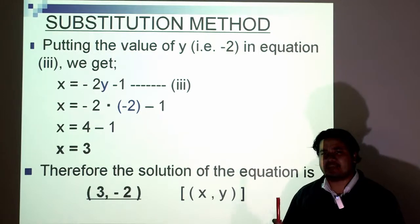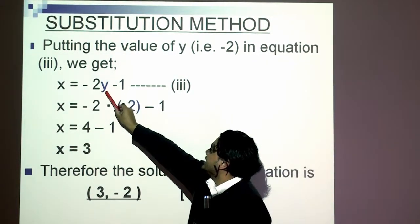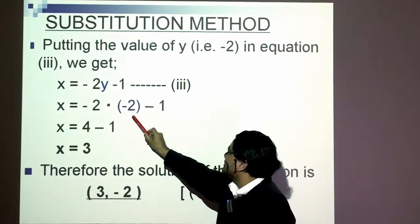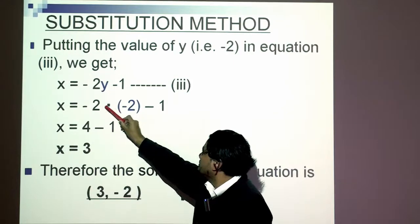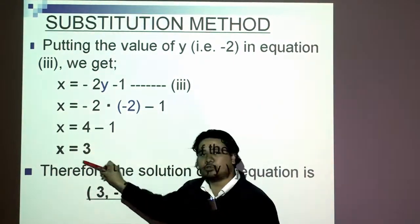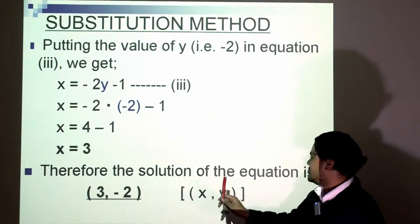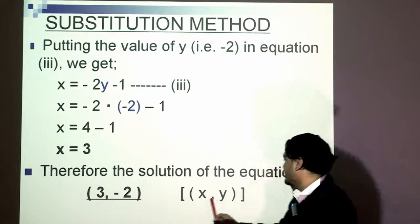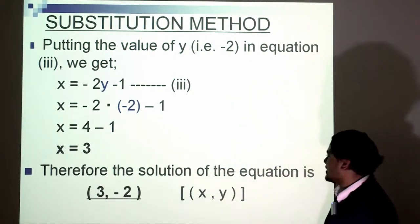Now that we've found the value for y, we can take that value for y, the negative 2, and put it back in equation 3. So we know that y equals negative 2. Substitute the value of y, and we get x = -2 multiplied by negative 2, take away 1. Therefore x equals 3. So the solution of our linear equations is 3, negative 2. That's also a point on the graph. Remember x, y - that's the value of x, that's the value of y.